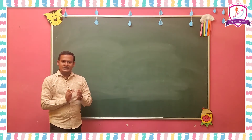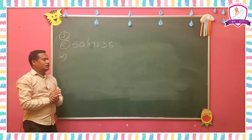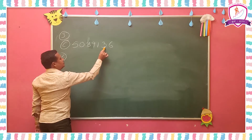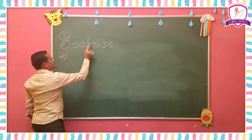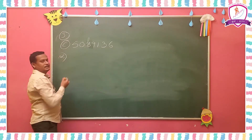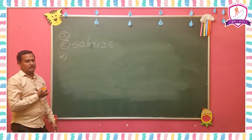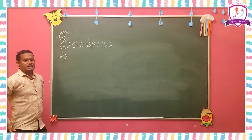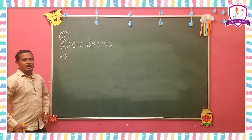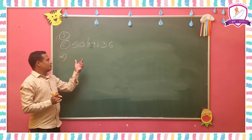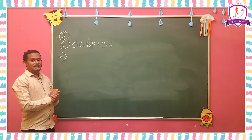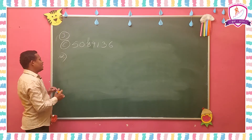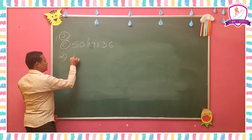I am going to explain the C sum here. How many digits are given in the question? 1, 2, 3, 4, 5, 6, 7 — a seven digit number is given. For this seven digit number, first you have to represent this number on the abacus. So you have to draw an abacus and represent the places.